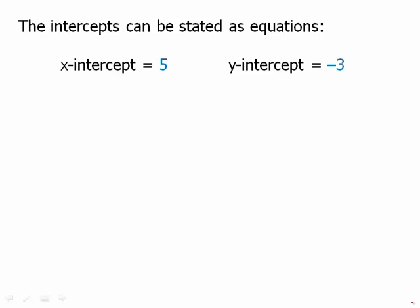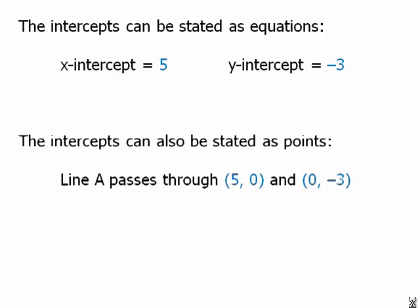The intercepts can be stated as equations — for example, x-intercept equals five and y-intercept equals negative three. We could also state them as coordinate points: line A passes through five comma zero and zero comma negative three. Any point with a y-coordinate of zero must be on the x-axis, so it's the x-intercept. Any point with an x-coordinate of zero must be on the y-axis, so it's the y-intercept.